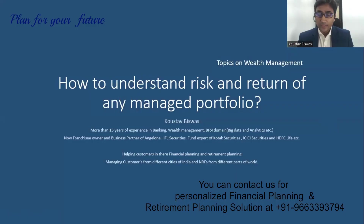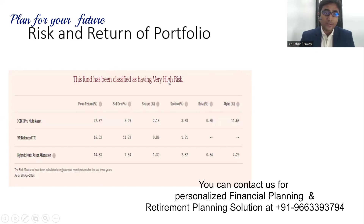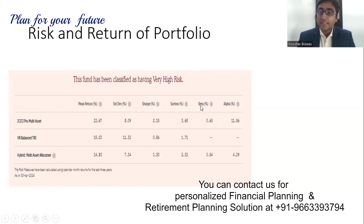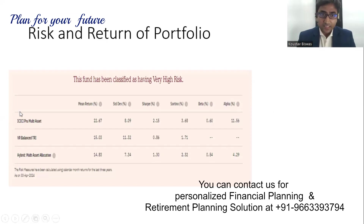This is one of the core topics of wealth management — how to understand risk and return of any managed portfolio. I have taken one example of a mutual fund, but these parameters you can use for PMS, AIF, and all managed portfolios. The key metrics are: mean return, standard deviation, Sharpe Ratio, Sortino Ratio, Beta, Alpha, and Jensen Alpha. All this data I have taken from Value Research.